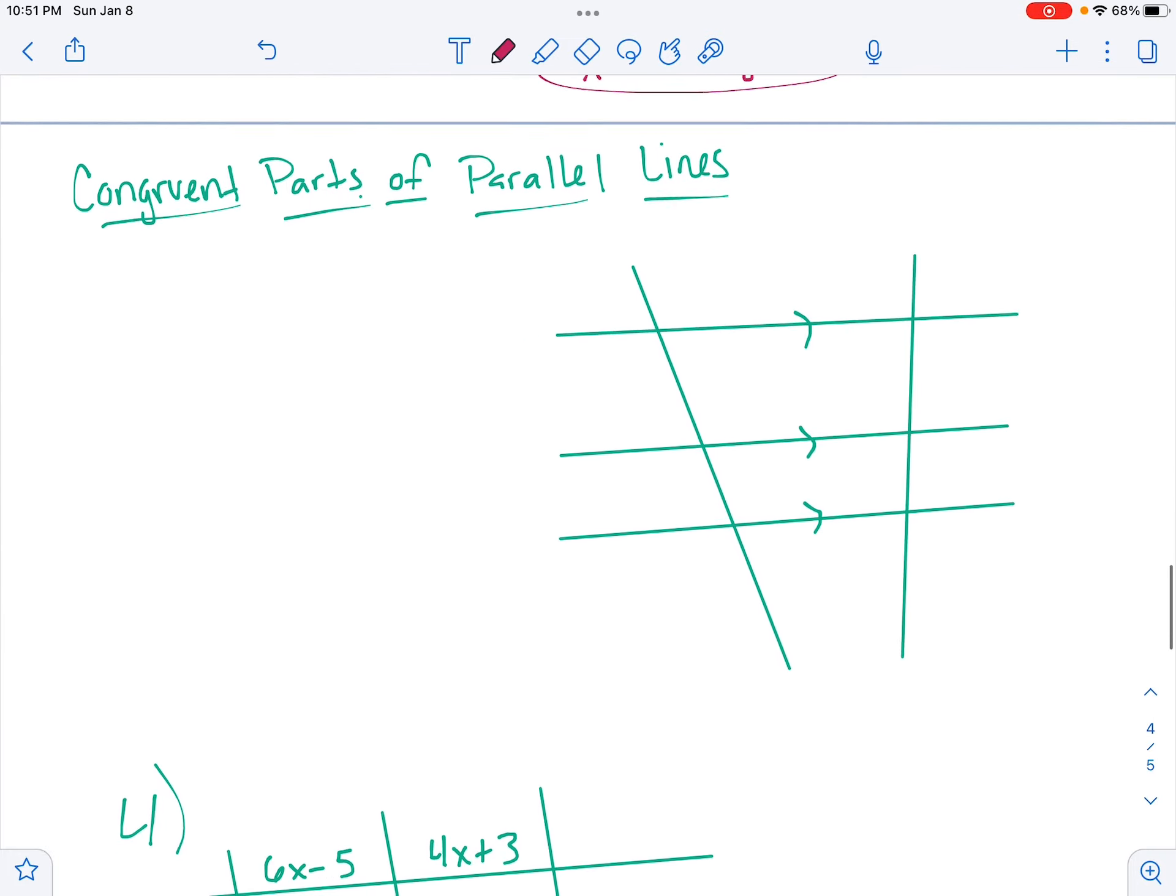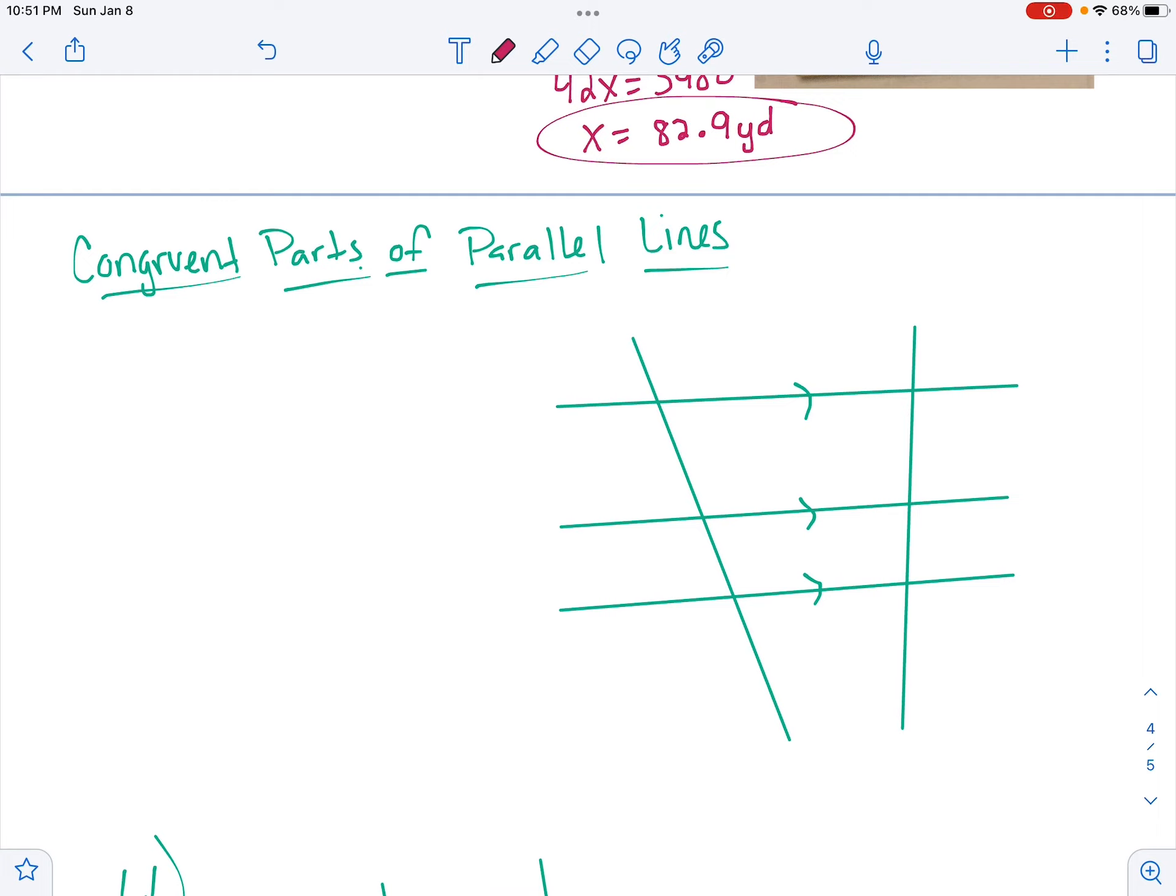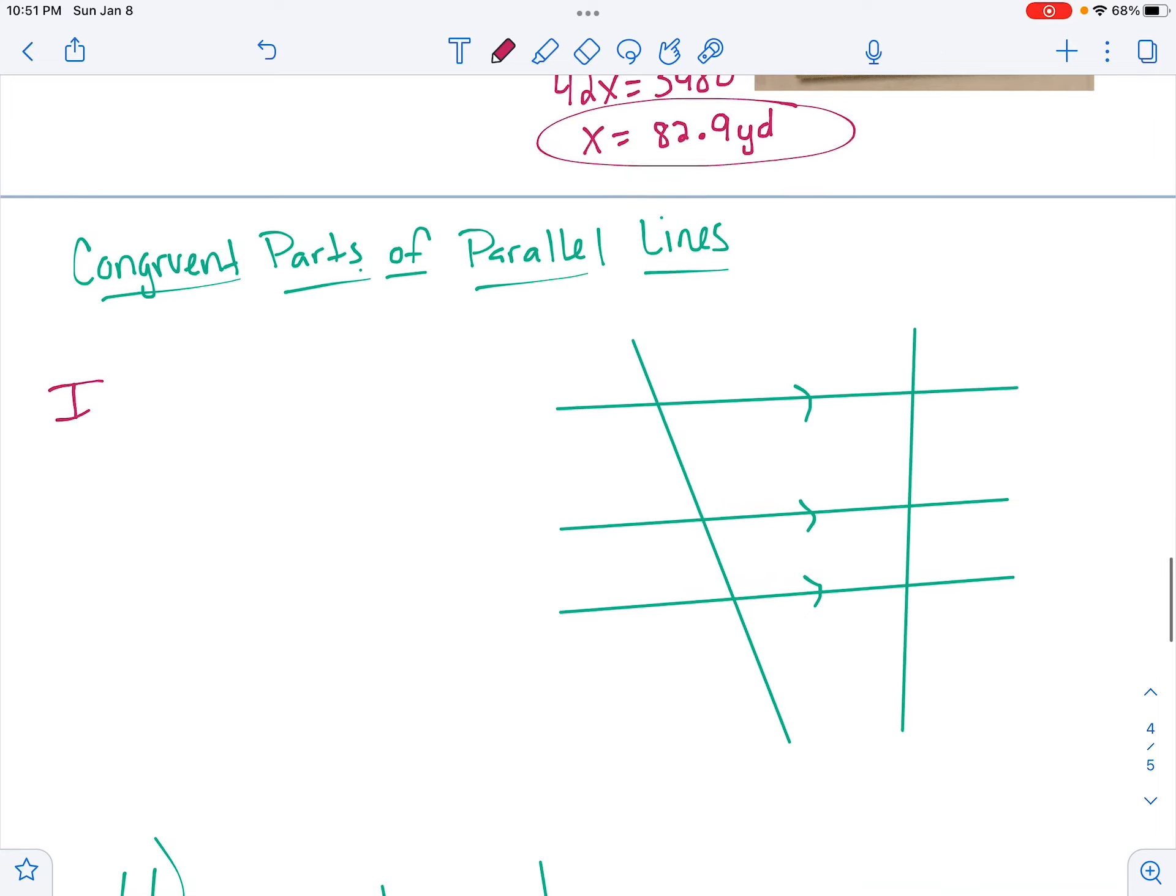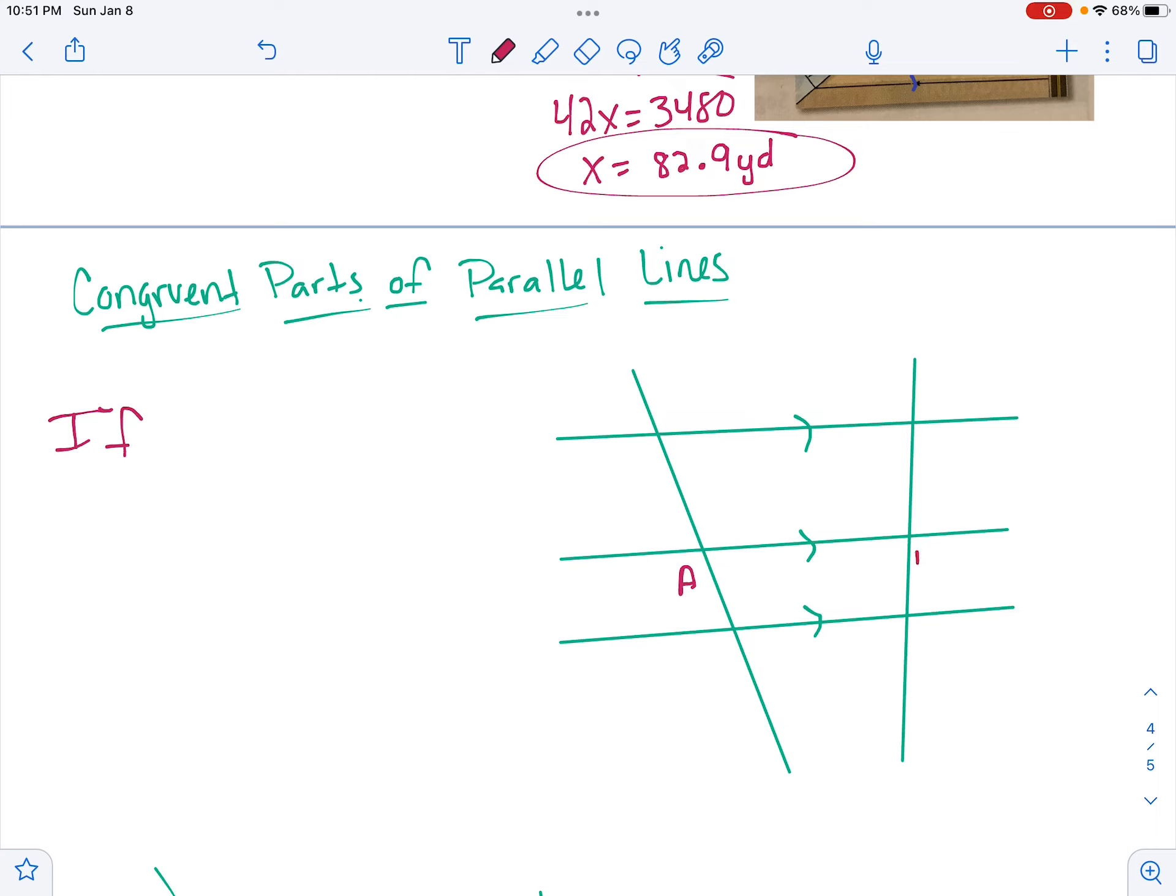All right, one more theorem. Congruent parts of parallel lines. So, if, let's call this AB, CD, EF. If AB cuts ED in half, then it cuts FC in half.